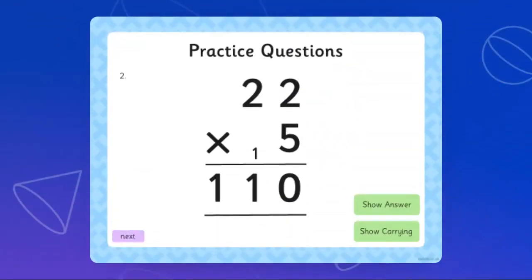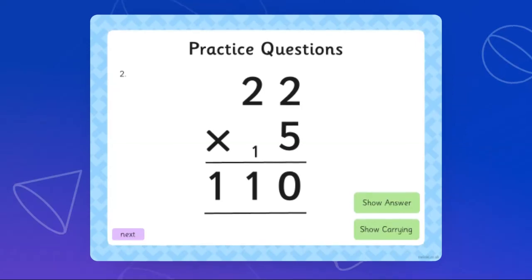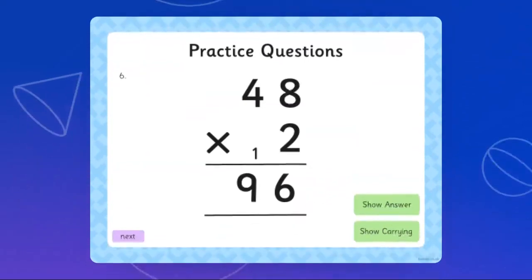22 times 5, which is 2 times 5 is 10, and 5 times 2 is 10 plus 1, which makes it 11. Then we have 8 times 2, which is 16, then 4 times 2, which is 9.